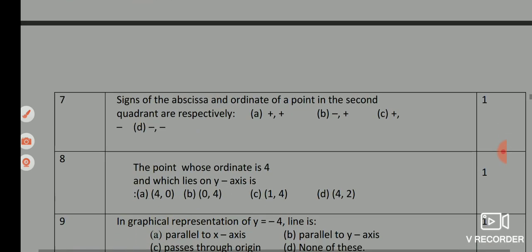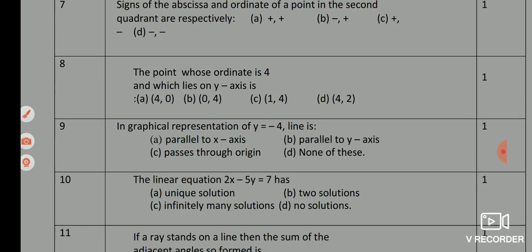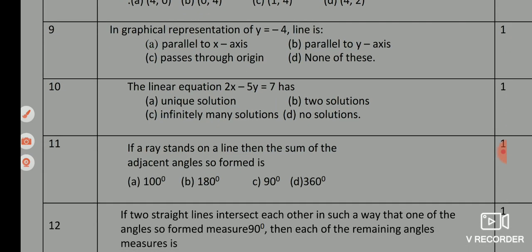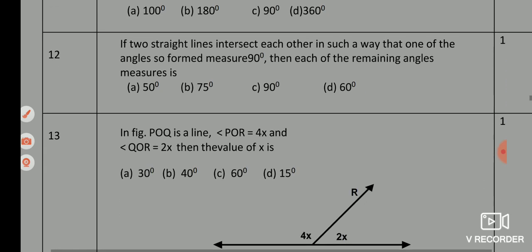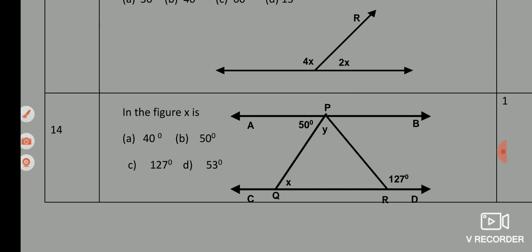Q7 — correct answer is option B, (minus, plus). Q8 — correct answer is option B, (0, 4). Q9 — correct answer is option A, parallel to X-axis. Q10 — correct answer is option C, infinitely many solutions. Q11 — correct answer is 180 degrees. Q12 — correct answer is option C, 90 degrees. Q13 — correct answer is option A, 30 degrees. Q14 — correct answer is option B, 50 degrees.